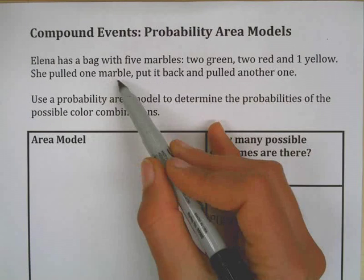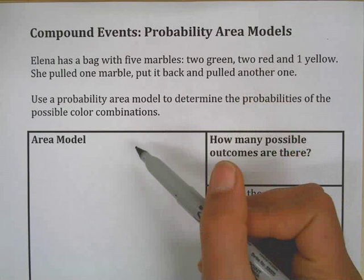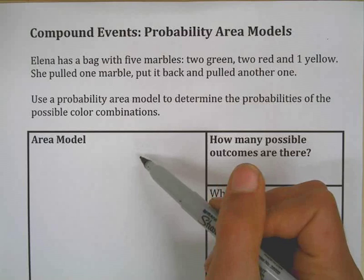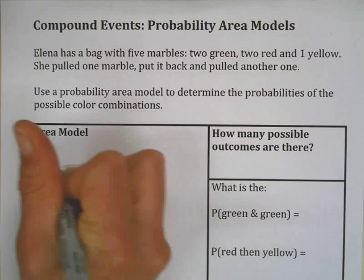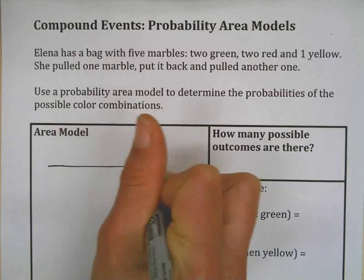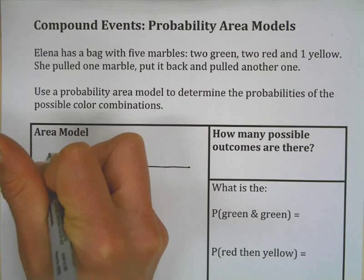She's going to pull one marble from the bag, put it back, and pull another. And you're going to use an area model in this case to determine the probabilities of the different color combinations. When you're doing an area model, you're using that concept of the area of a rectangle to set this up.